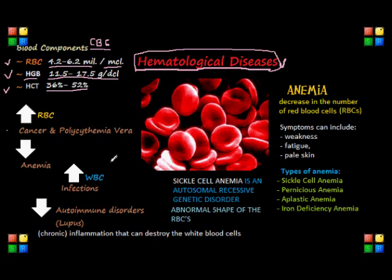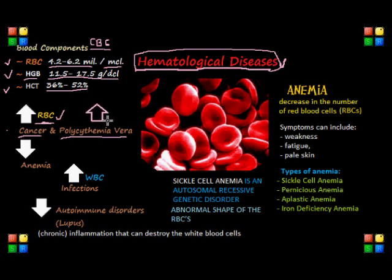It's essential that we know these values to determine if they're normal or abnormal so we can further assess our patient's conditions. We can ask ourselves what can be the reason for high and low values of these components. If we have a patient with cancer or polycythemia vera — a bone marrow disease that leads to an abnormal increase in blood cells, primarily red blood cells — then the RBC values will obviously increase. On the other side, conditions like anemia tend to bring the red blood cell count lower than normal, which we will go over more in depth in a little bit.